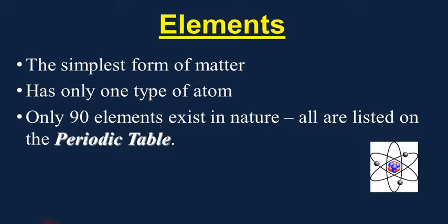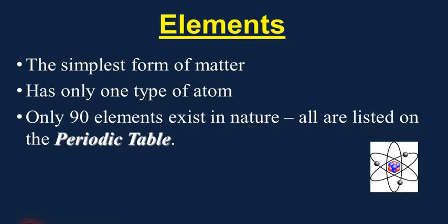Now, if you look at a current periodic table, you'll notice that there are more than 90 elements — at least 118 elements have been discovered up to this point. Those other 28 elements have been made in labs, so they're synthetic elements. You're not going to find them in nature, but they do exist and have been created in laboratories. This chart is what we're talking about when we say periodic table, and it's going to be one of the most important things we focus on in this chemistry course.